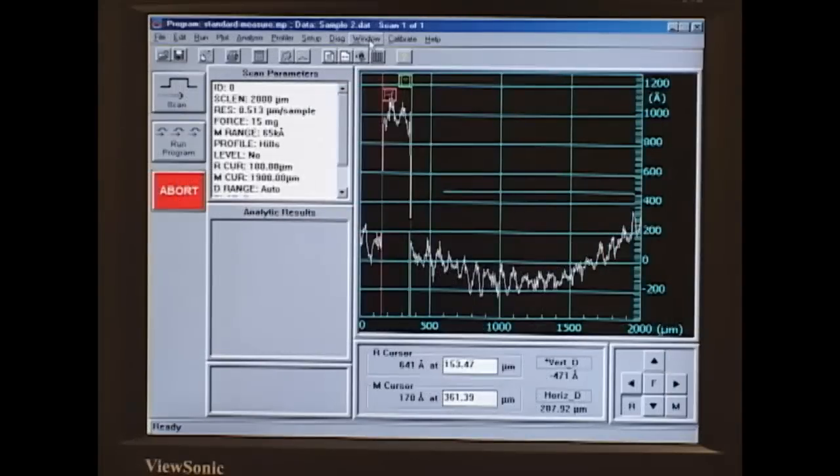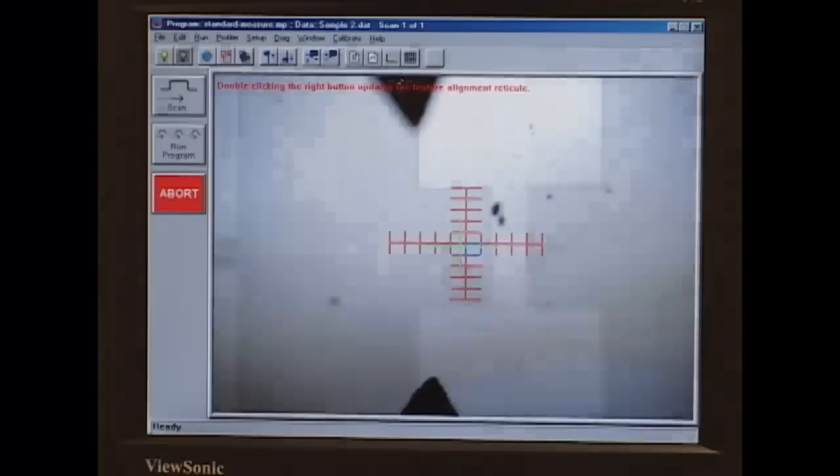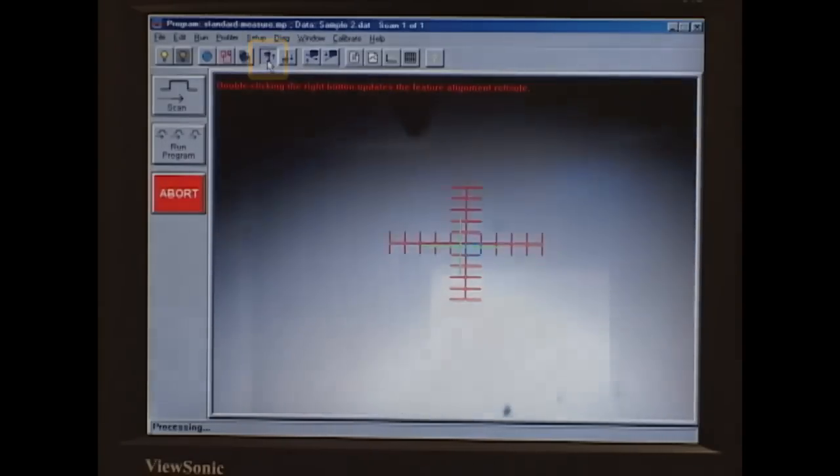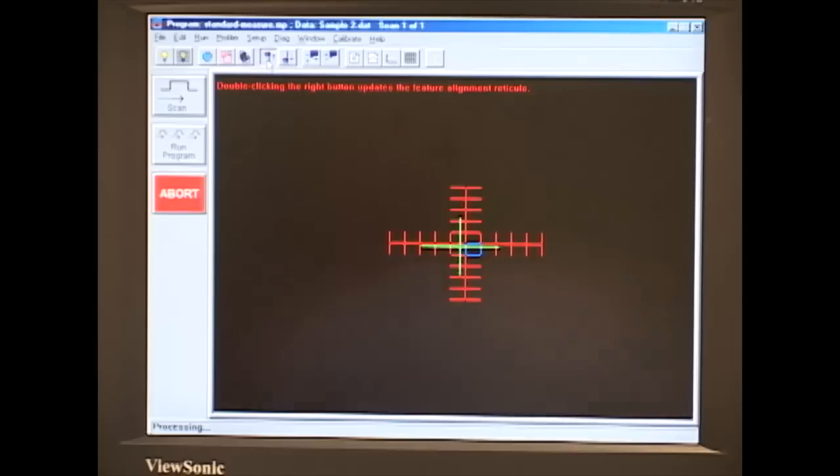So when we're finished, we'll go to the Window tab and the Sample Positioning button. And we'll go over here to the Tower Up to Load Position button. Click that. And that will bring the stylus out of the way so that you can remove your sample.